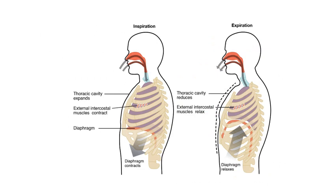So here's what a single respiratory cycle looks like. Inspiration involves flexing the diaphragm and the external intercostals, which widens the thoracic cavity — higher volume in there — and that draws air in. Exhalation involves relaxing the diaphragm and the external intercostals, so now we have less space in the thoracic cavity, which forces air out.